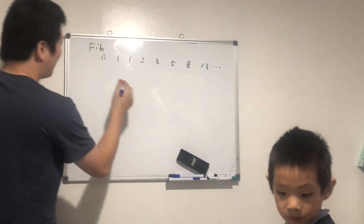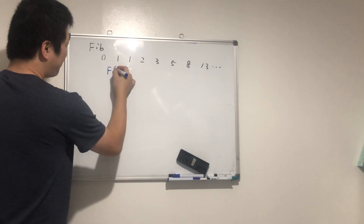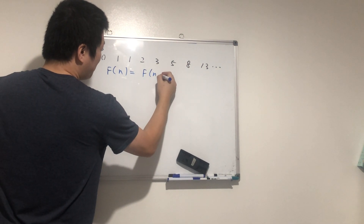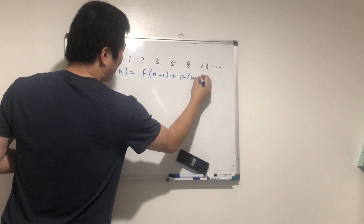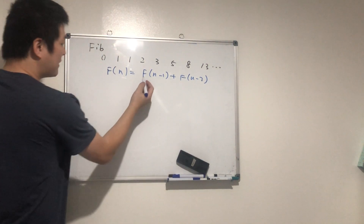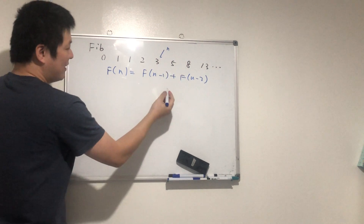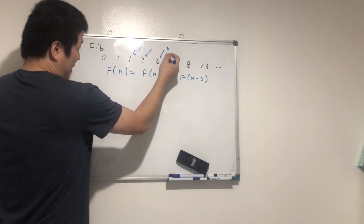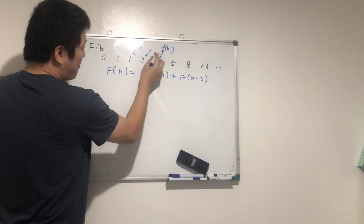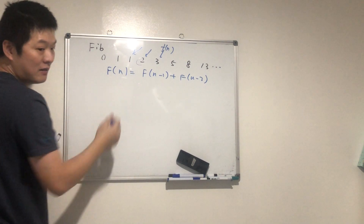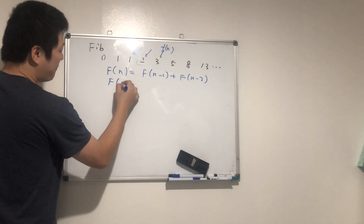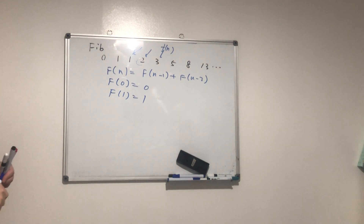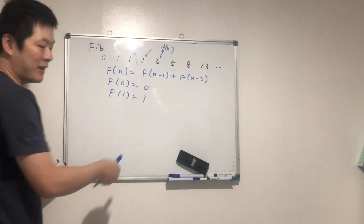If we put it in a mathematical equation, we can say f(n) equals f(n-1) plus f(n-2). If n is here, then n-1 is the previous item and n-2 is the one before that. We also need to define the first two base cases: f(0) equals zero, and f(1) equals one.